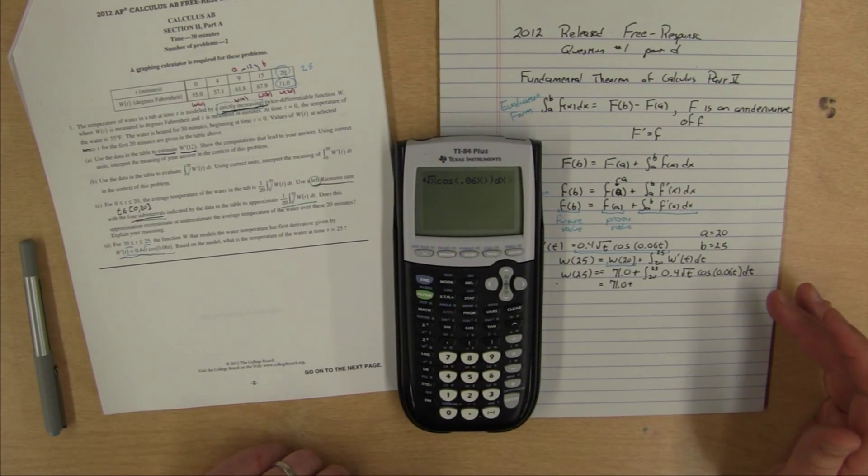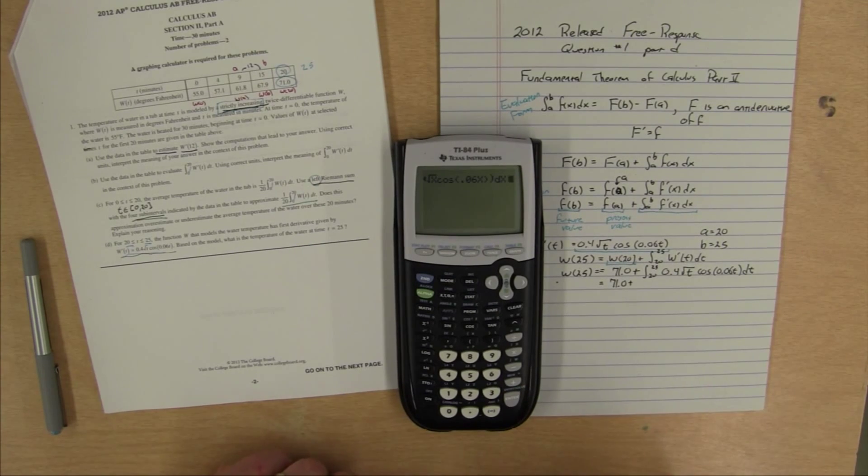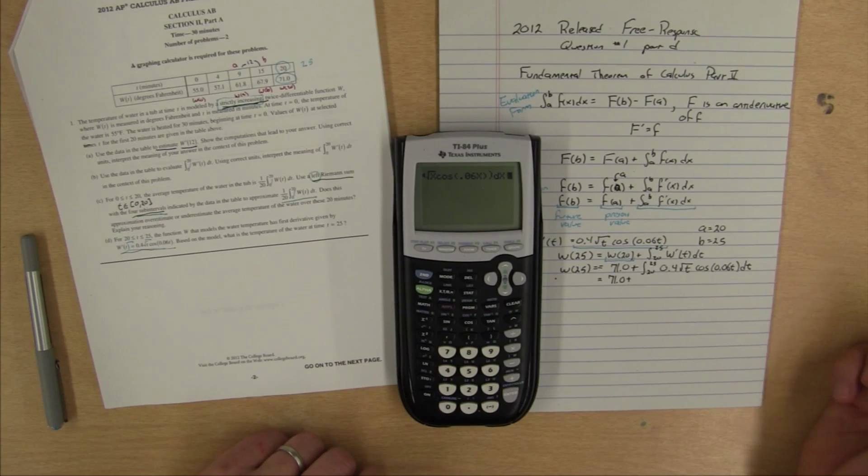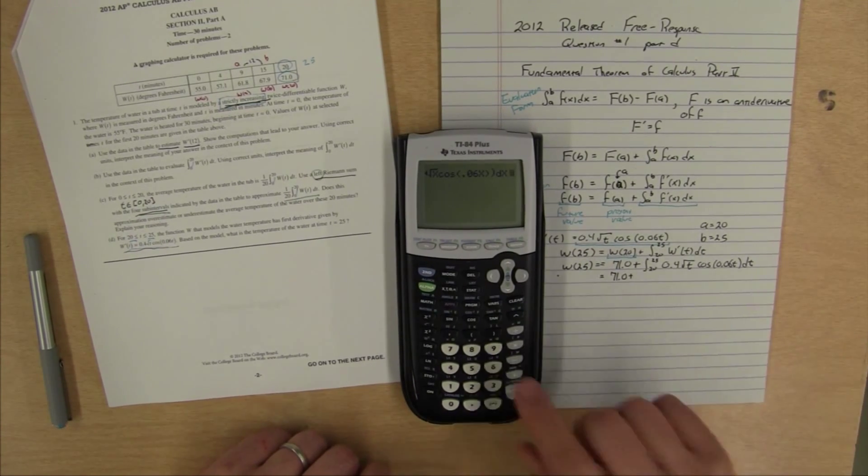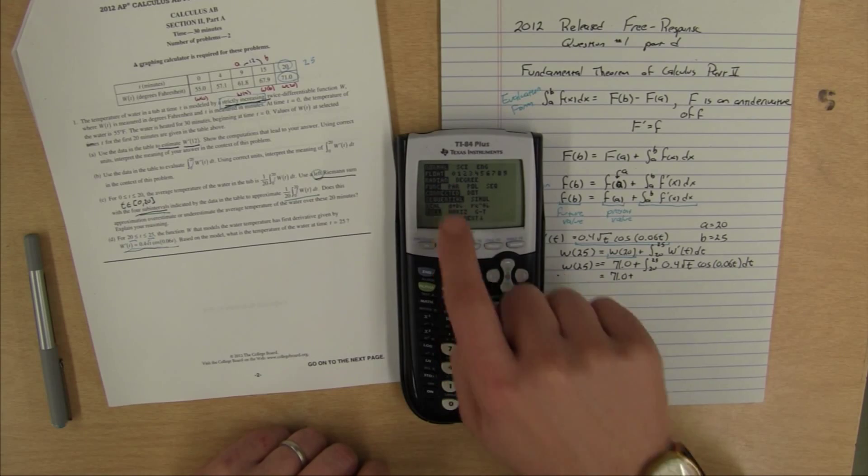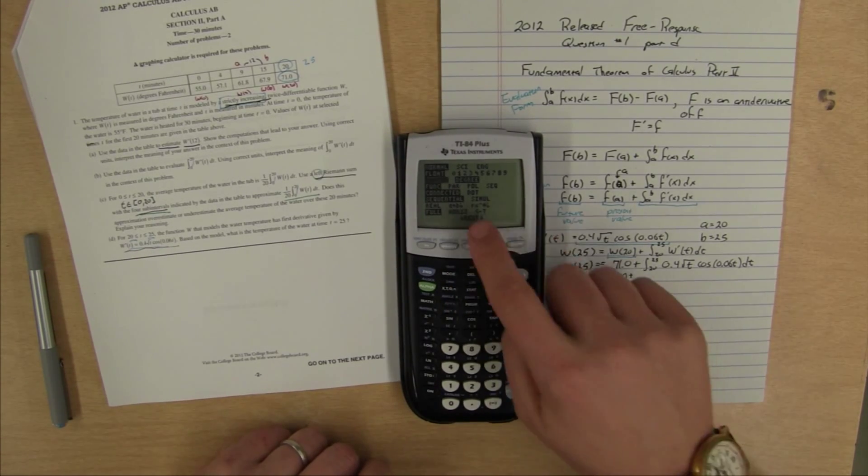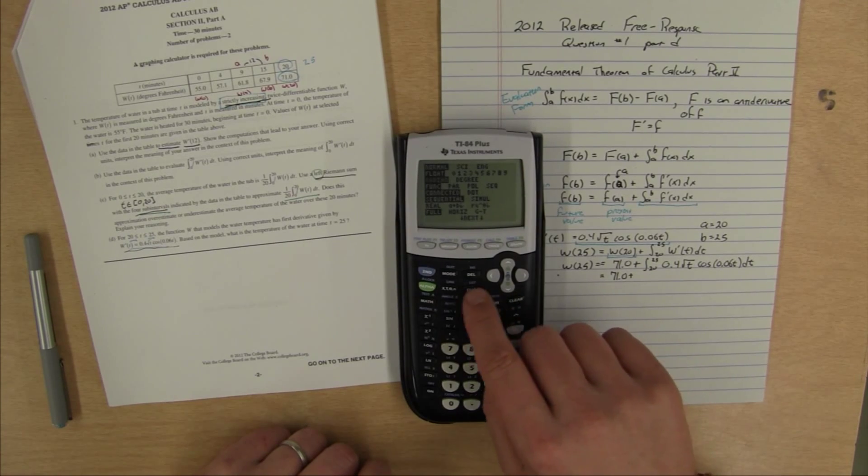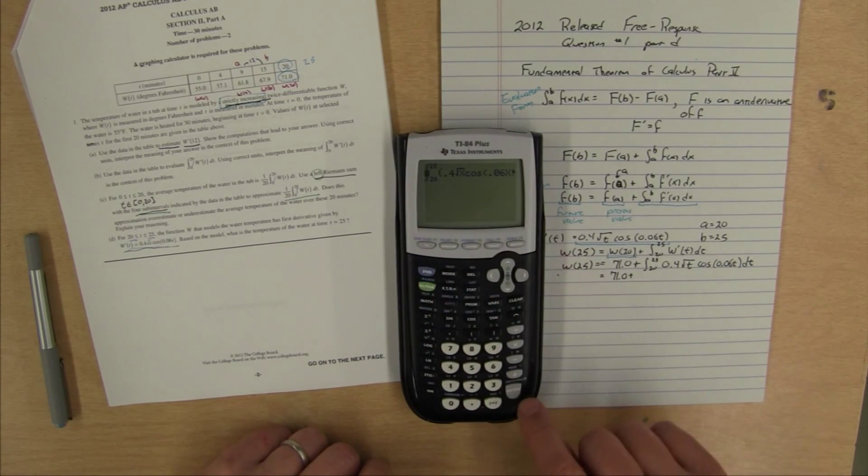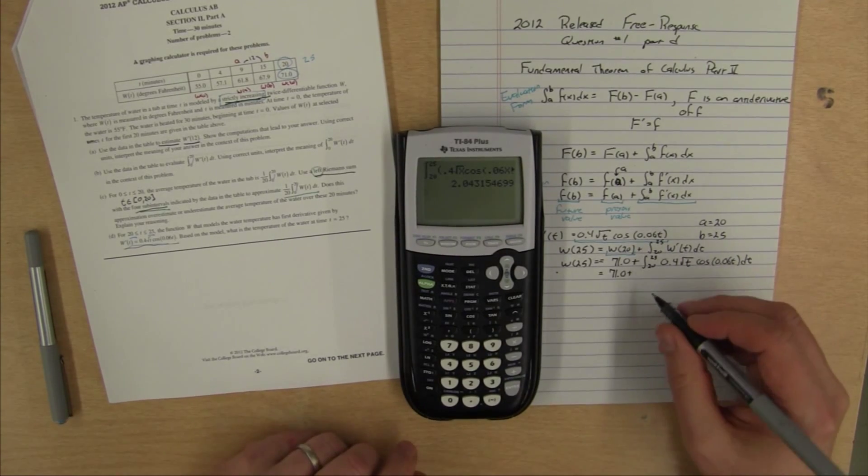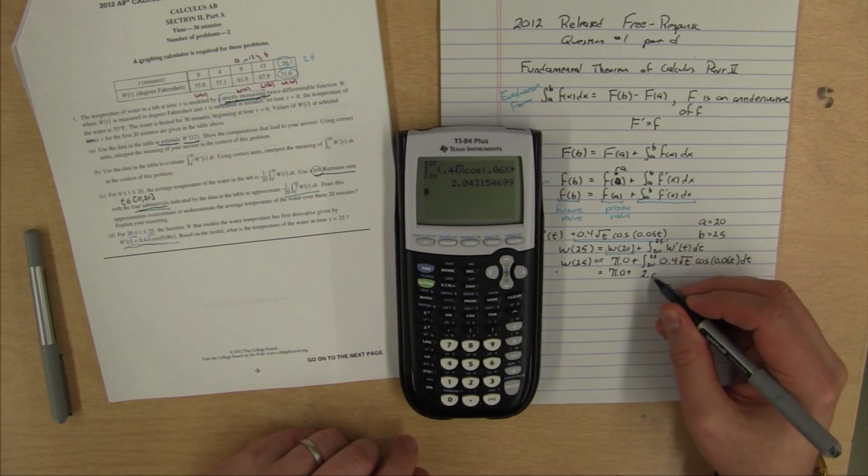One thing we want to do before we do the integral is your calculator for this problem, unless there's a reason to be in degrees, we need to be in radians. That's going to matter because I'm doing a cosine. I'll just check my mode, make sure I'm in radians. That's good. If I were in degrees, I would have to change it. I'm in radians, so I can keep it. Now I can do my integral enter. It tells me it's 2.043. So this is plus 2.043.